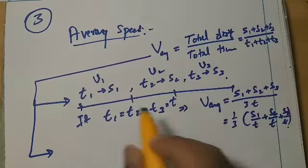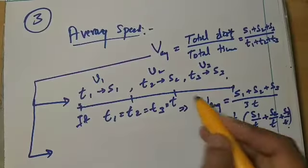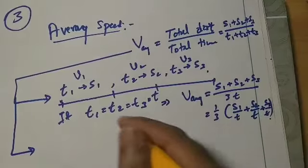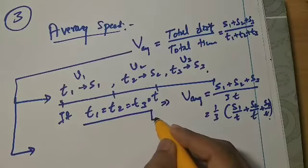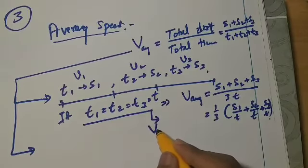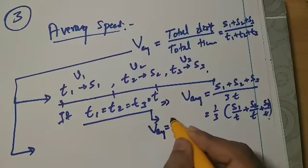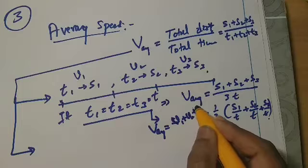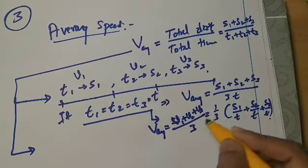So in this particular situation, average speed expression is V1 plus V2 plus V3 by 3.